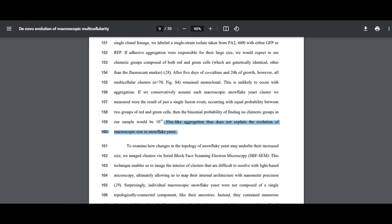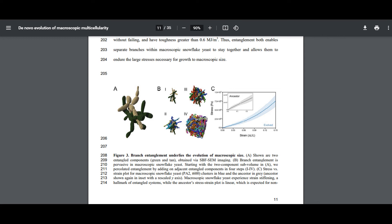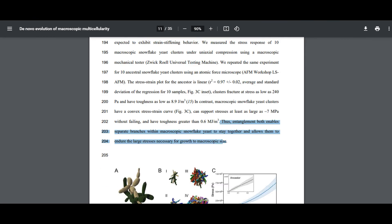The researchers wondered whether the clusters had become adhesive, sticking to each other. However, staining the cells revealed that this was not the case. The paper concludes, flock-like aggregation does not explain the evolution of macroscopic size in snowflake yeast. The researchers were surprised to find that even though the clusters were clonal, they were not totally connected. Even when breaks occurred, the cells were entangled together. The researchers write, entanglement both enables separate branches within macroscopic snowflake yeast to stay together and allow them to endure the large stresses necessary for growth to macroscopic size.